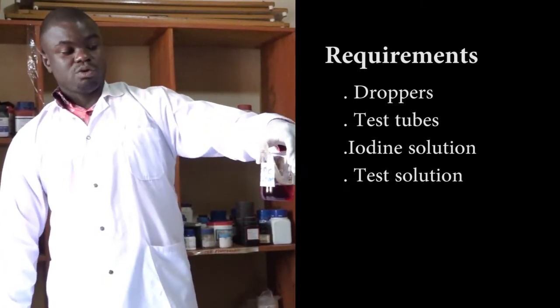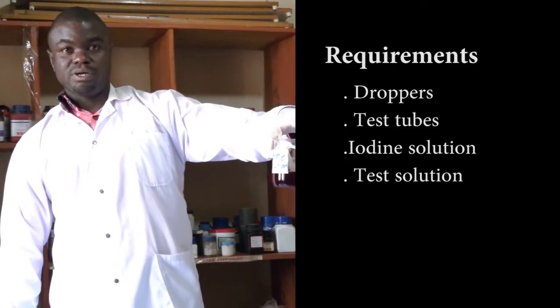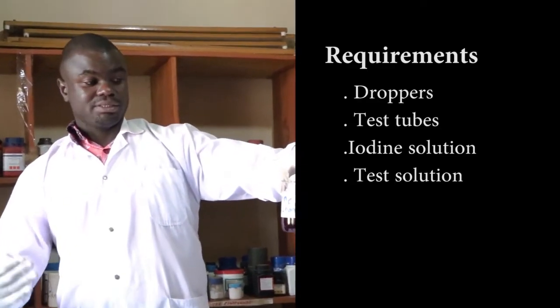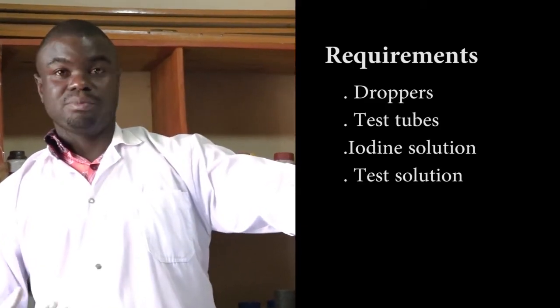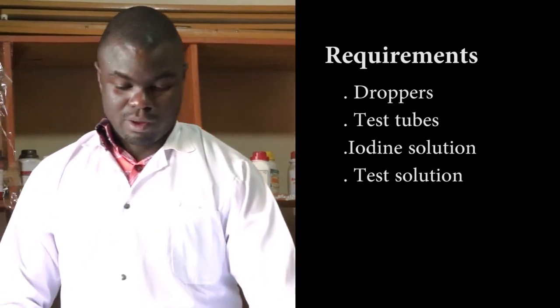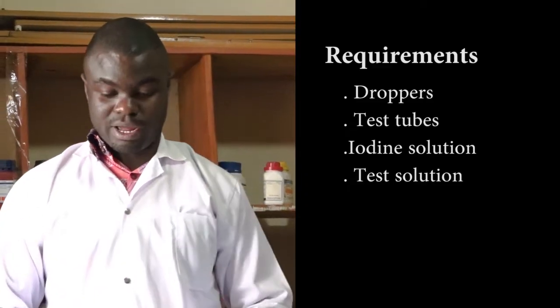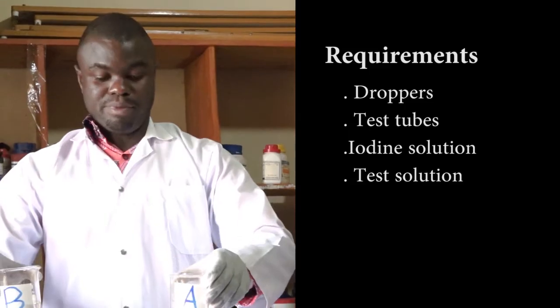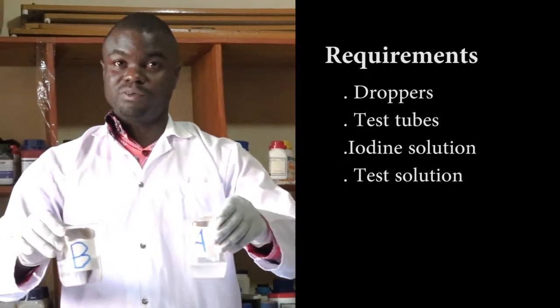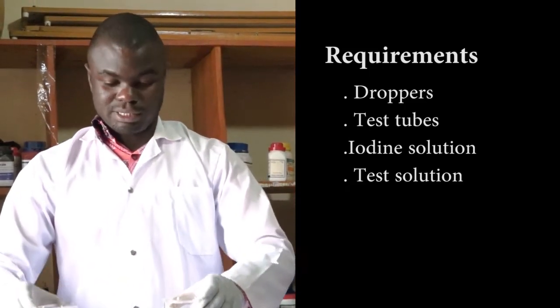It is normally brown in color when concentrated. It is simply a mixture of iodine crystals in potassium iodide. We also need the sample solution and here I have got two solutions A and B, and we have to investigate which one of the two contains starch.